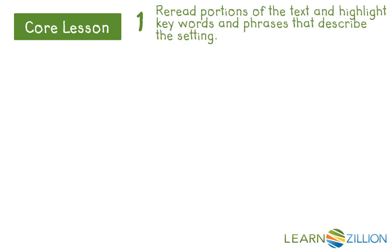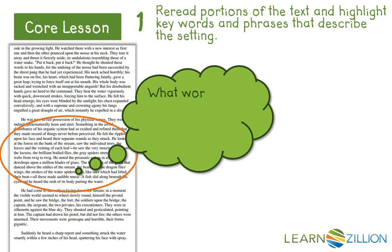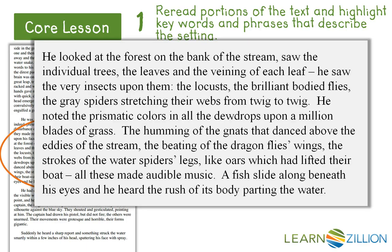Let's look at another description of the setting from a little later in the story — specifically Section 3, Paragraph 3, highlighted on your screen. I'm asking myself what words and phrases in this section describe the time and/or the place for the action of the story. This is the part where Farquhar is escaping down the stream after the rope broke during his hanging, and this is the setting he notices during that escape.